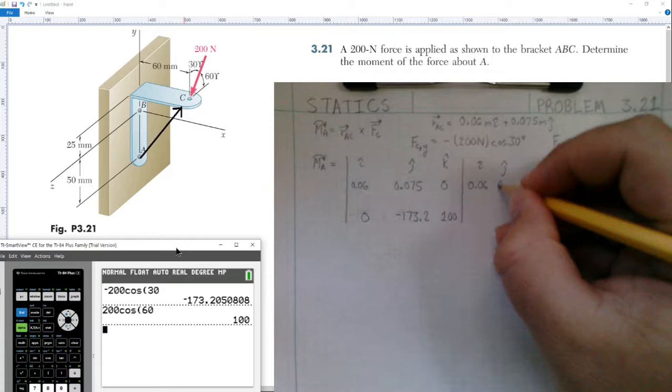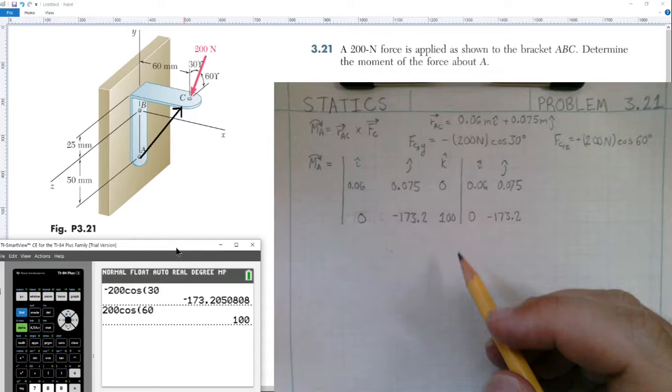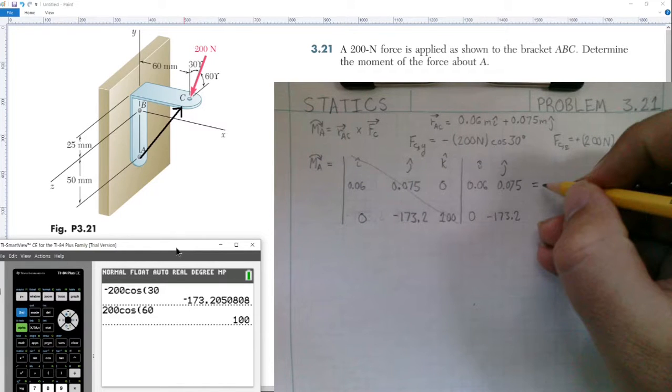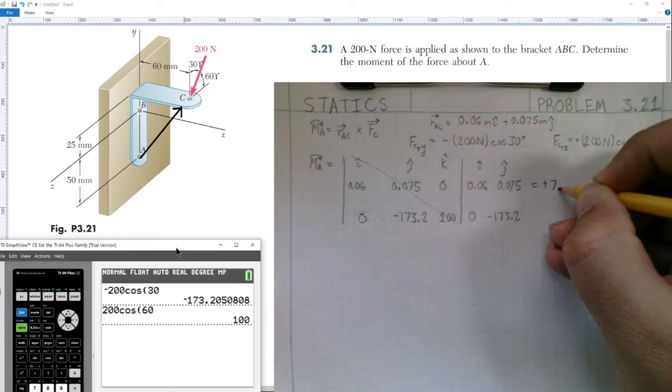Now we're going to evaluate this determinant for this matrix by multiplying and adding or subtracting different diagonals. When I'm going to go down to the right, I'm going to add. So this would be 0.075 times 100, moving the decimal two places. This would be positive 7.5 in the i-hat direction. Good.